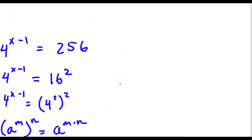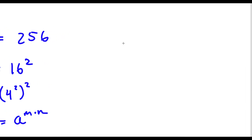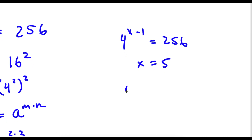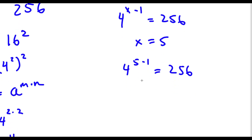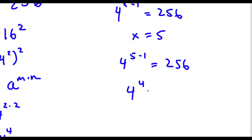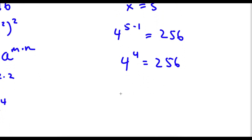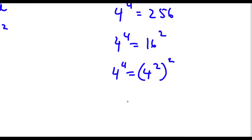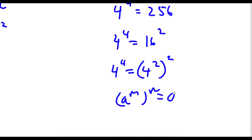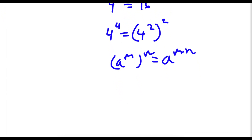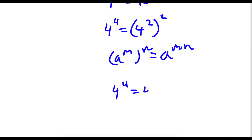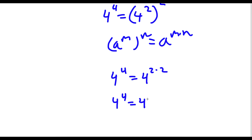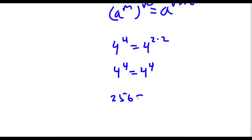Now to check: my original equation was 4 to the power of x minus 1 equals 256. I know that x is equal to 5, so I have 4 to the power of 5 minus 1 is equal to 256. Now 5 minus 1 is 4, so I have 4 to the power of 4 is equal to 256. 256 is the same as 16 squared, and 16 is the same as 4 squared, so 4 squared to the power of 2 equals 4 to the power of 4, which is 256. So 256 equals 256 — confirmed.